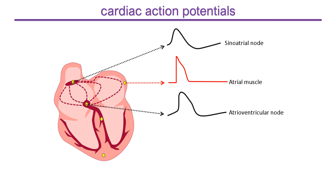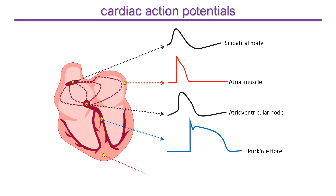As the action potential is conducted down the Purkinje fibres of the conducting system it changes again. It activates rapidly and has a long plateau phase which prevents premature contraction of the ventricles. The action potential reaching ventricular muscle has a pronounced and prolonged plateau which is important for calcium influx and the control of contraction, and also prevents premature re-excitation of the muscle. The ventricular action potential is longer than the signal in atrial muscle, which must finish contracting and ejecting blood into the ventricles before the more powerful ventricles contract.